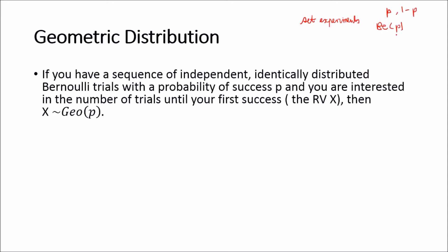So if we have a set of experiments with each trial being a Bernoulli trial, and they're identically and independently distributed, each trial has the same success probability, then the number of trials until we observe our first success will follow a geometric distribution with the probability p.